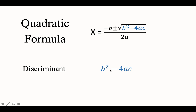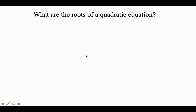Notice that b squared minus 4ac is the radicand, just a part of this quadratic formula. What is the use of the discriminant and what is the important role of this in solving quadratic equations? We will learn that further, but first let us identify what are the roots of a quadratic equation.